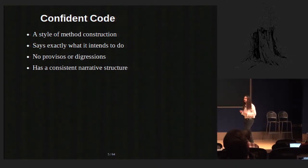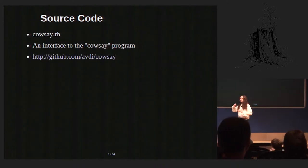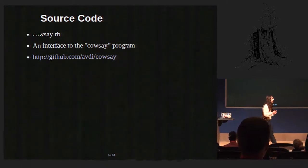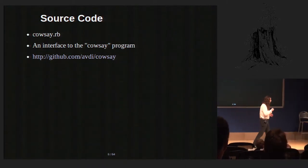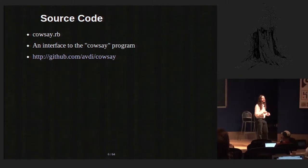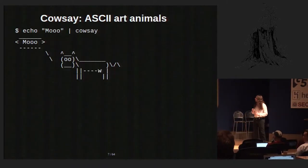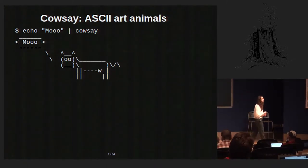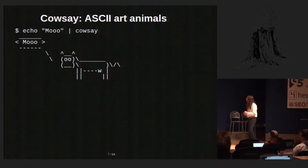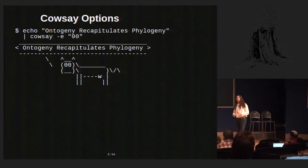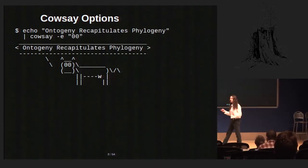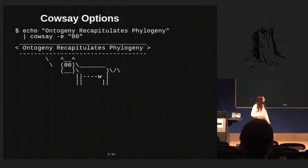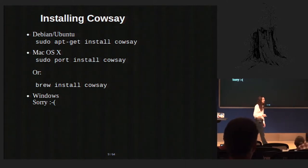The demo code for this talk is online. It's something I put together for this talk, but it's all built out of stuff I've seen or written in the real world. It is an interface to the very important cowsay utility in Unix. You put some text in, you get a little cow graphic out — ASCII art graphic. It's got various options: you can change the eyeballs, change the whole animal, make it a thought bubble. You can install it and play with it if you want.